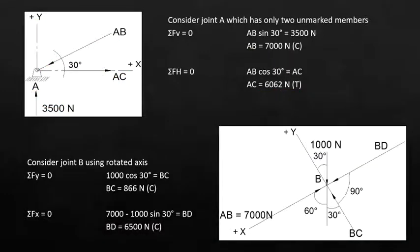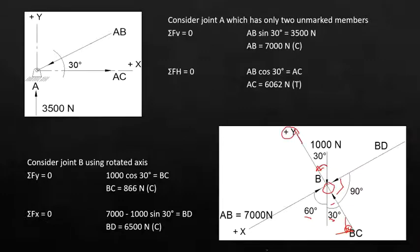At joint B we use a rotated axis. The angle is 60 degrees, so this becomes 30 and this becomes 60. Since 30 plus 60 is 90, the remaining angle is also 90. If this is 30 then this is also 30, so we rotate counterclockwise, making this line our new y-axis and the other our new x-axis. Summing forces along the new y-axis, 1030 newtons going down equals BC going up, so BC equals 866 newtons and is in compression.